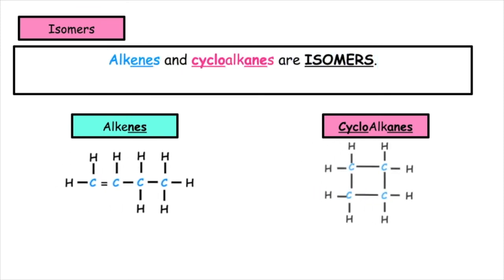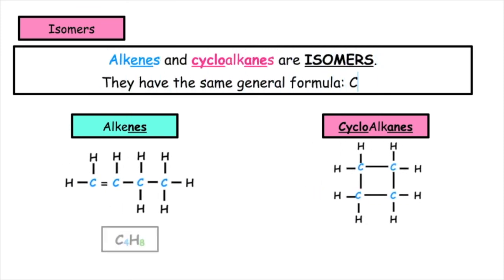Alkenes and cycloalkanes are isomers. They have the same general formula, CnH2n.